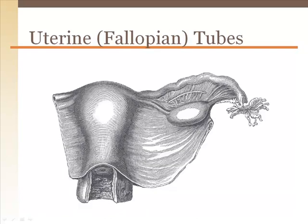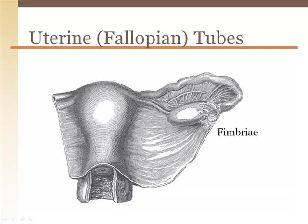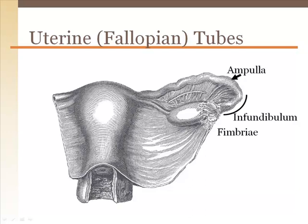Once the egg has been ejected from the ovary, it enters the uterine or fallopian tubes and travels to the uterus. There are two uterine tubes that extend laterally from the anterior superior region of the uterus. At the end of the uterine tubes are finger-like projections called fimbriae. These fimbriae cup around the ovary but do not touch it. When an egg is ejected, it must propel across a gap to enter the uterine tube. The fimbriae help direct the egg like a catcher's mitt. The end of the uterine tube is the infundibulum; near the middle is a slightly enlarged area called the ampulla, which is the most common site for fertilization. The end connecting to the uterus is the isthmus.